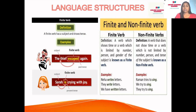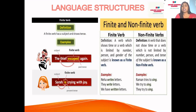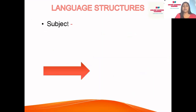'Neha writes letters' is present tense — one person. 'They write letters' changes the number of people — Neha was one, they are many. 'We have written letters' changes the tense to past. So a finite verb changes with tense and number of people. A non-finite verb, on the other hand, is not limited — it has 'to' in front of it. Example: 'Raymond tries to sing,' 'we try to sing,' 'they try to sing' — even if you change the tense or number of people, the word 'sing' stays the same. Finite verb changes with tense and number; non-finite verb does not change and has 'to' in front of it.